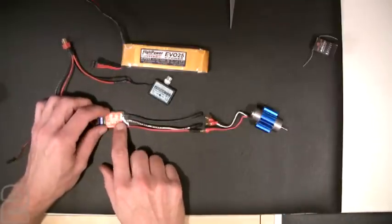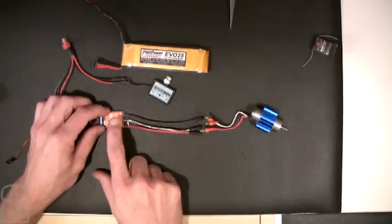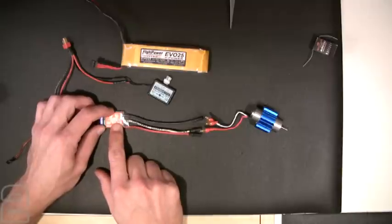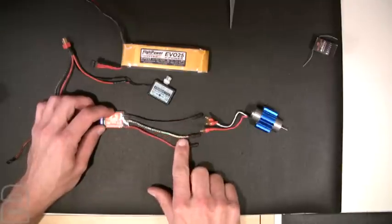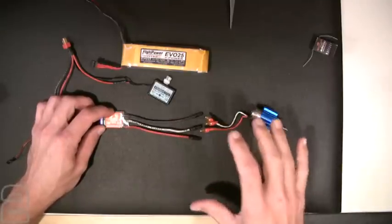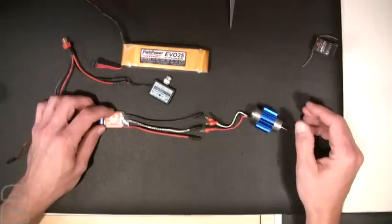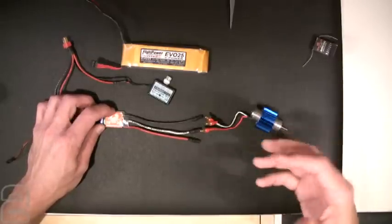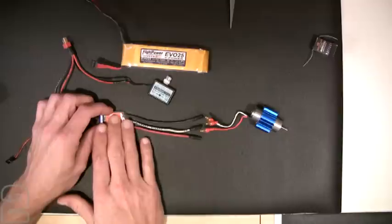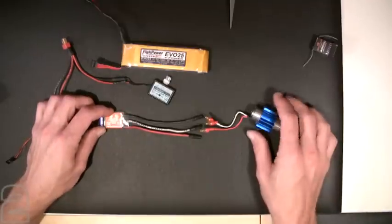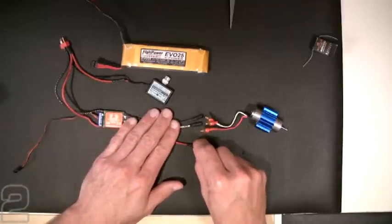Now, some of your ESCs do have the ability built into them to reverse the direction of the motor through a USB programmer or software programming. If you can't get to the connection, if it's very difficult, say you've put a helicopter together and it's in a scale body and at the very end you realize my motor is going in the wrong direction, it's difficult to dig all those wires out and reverse it. So if your ESC has the capability of reversing in the software programmer in the setup, that can come in really handy. Otherwise, just reverse those two outer wires and you're set.